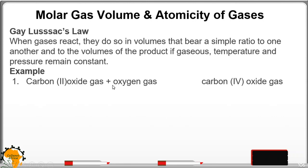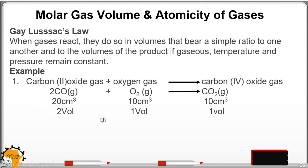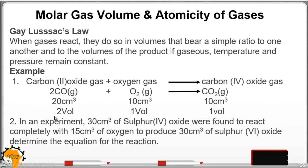Carbon monoxide gas plus oxygen gas produces carbon dioxide gas. 2 carbon monoxide plus oxygen gas produces carbon dioxide. So 20 volumes and 10 centimeters cubed and 10 of carbon dioxide. We divide with the smallest value which is 10 to get 2 volumes, one volume, one volume. So the reaction is in that kind of volumes.